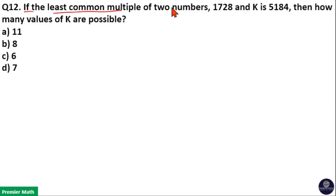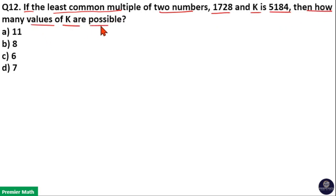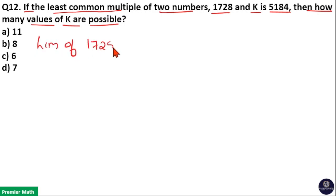If the least common multiple of two numbers 1728 and K is 5184, then how many values of K are possible? The question says LCM of two numbers 1728 and K is equal to 5184.